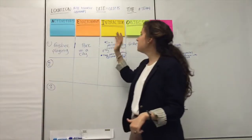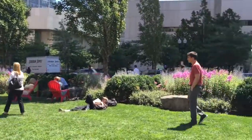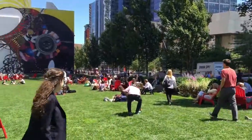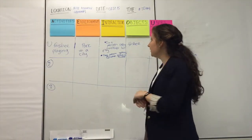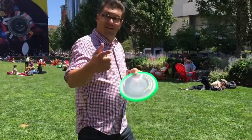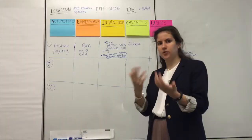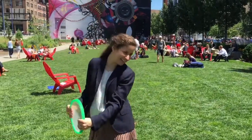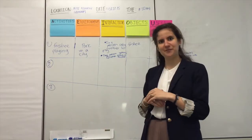Then you notice the environment. We were at a park in the middle of the city, so maybe what was going on? Some buildings, some cars — anything in the environment. Interactions: we saw various interactions, but there was one guy asking someone else to come join him to play frisbee. And we also saw one person get really excited when she grabbed a frisbee.